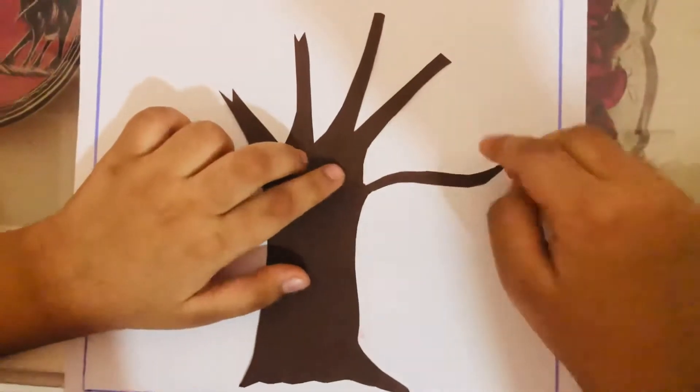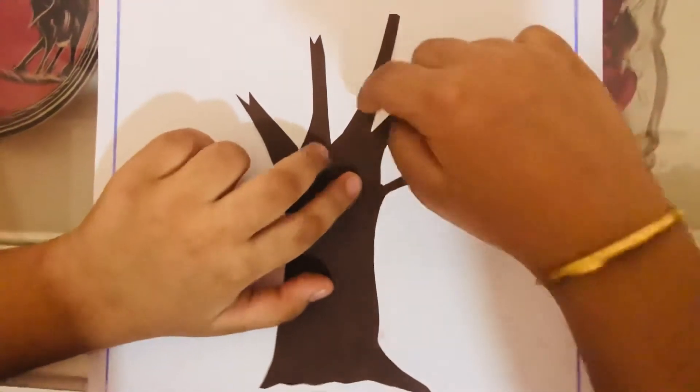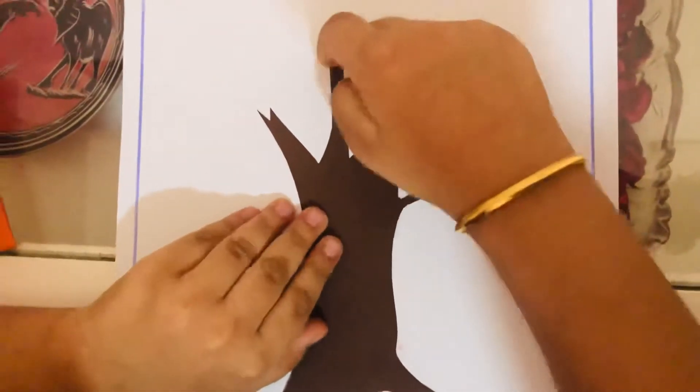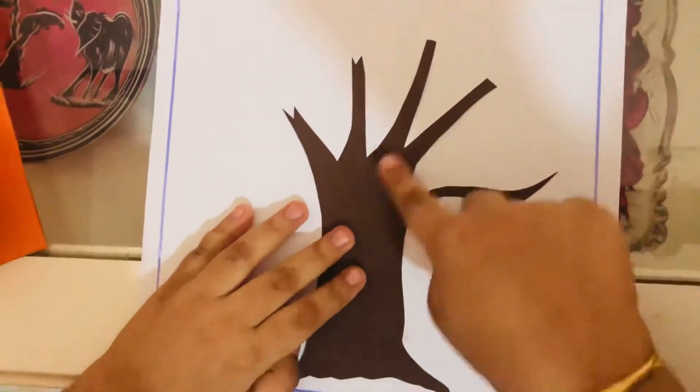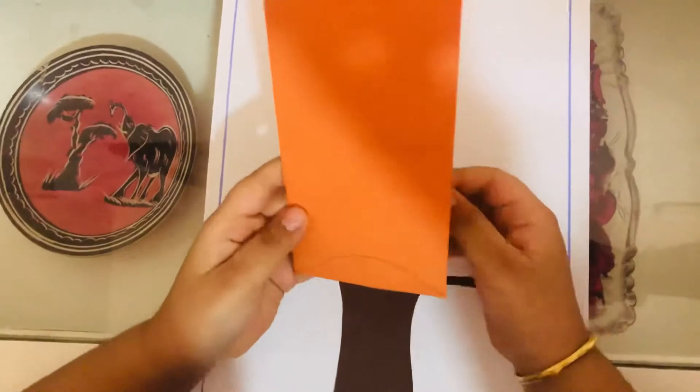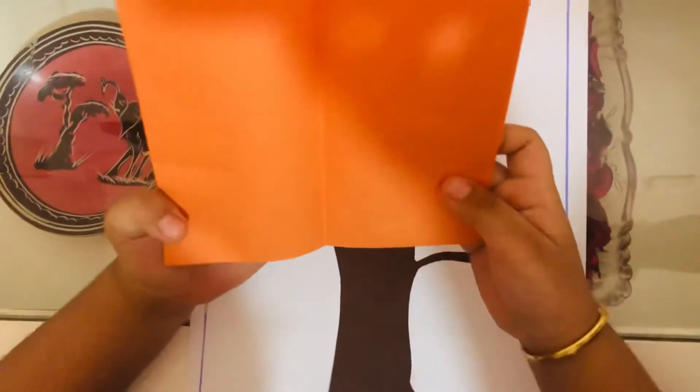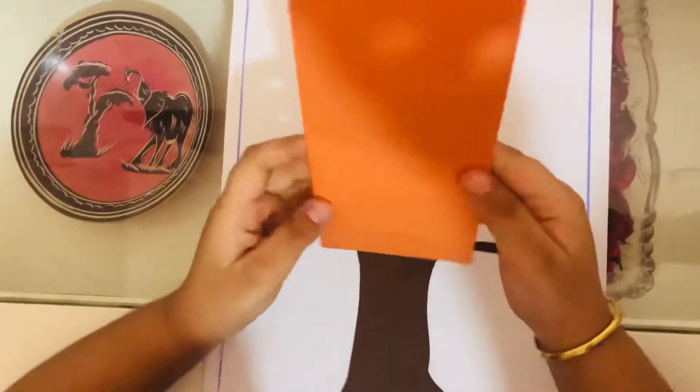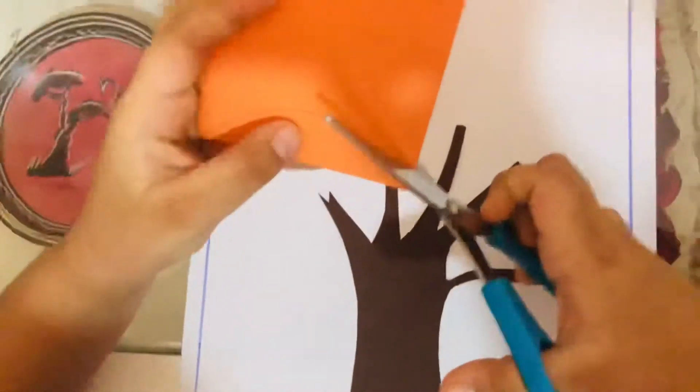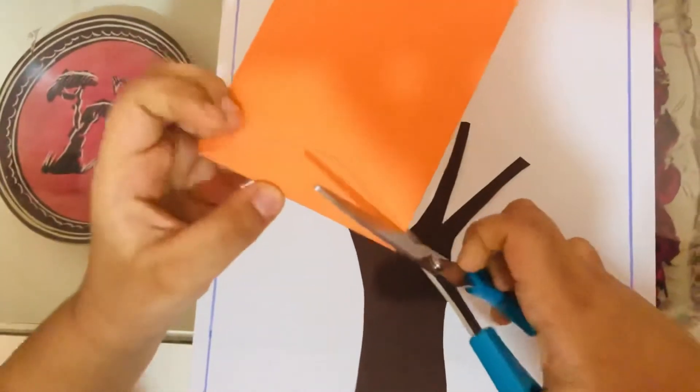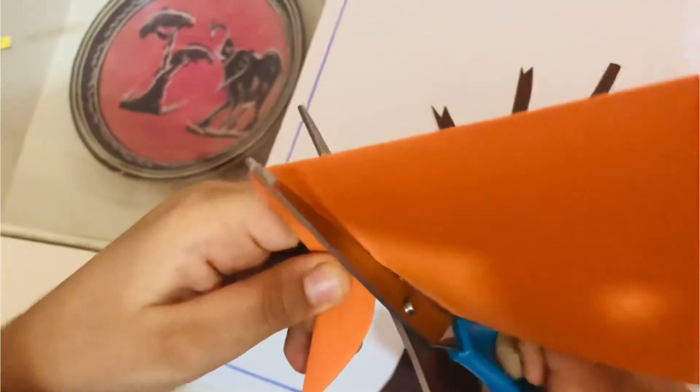Now I am making the leaves. I am making four leaves using orange paper. I will fold these four sides and then we will cut this. I'll leave the leaf in half and cut it.